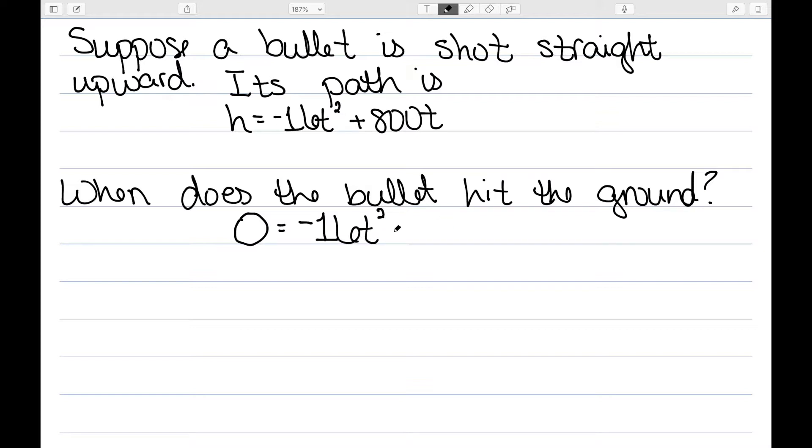So I have 0 equals minus 16t squared plus 800t. I can factor out a minus 16t. When I do that, I'm left with t minus 50.